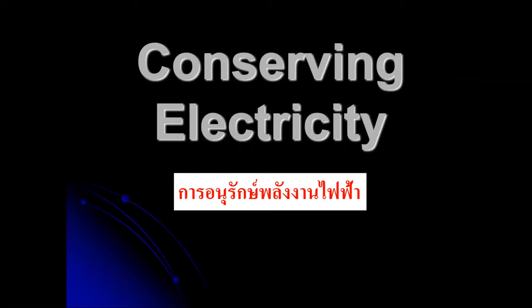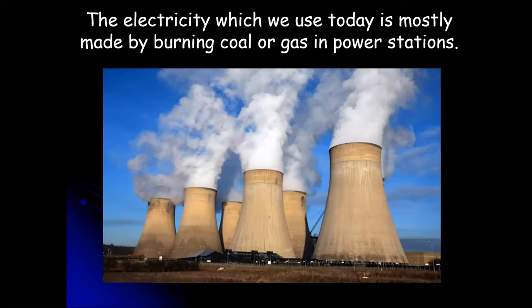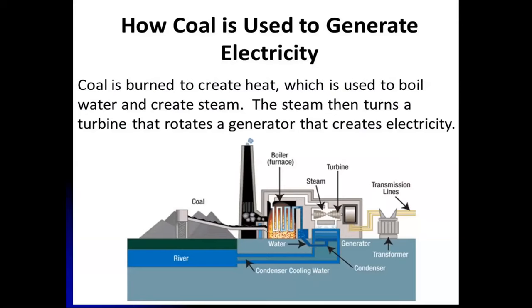Conserving electricity means saving energy. The electricity which we use today is mostly made by burning coal or gas in power stations. These fuels take many years to form and their supplies on earth are limited. The burning of these fuels also causes pollution. Therefore, we have to be careful with the use of electricity so that we save fossil fuels.